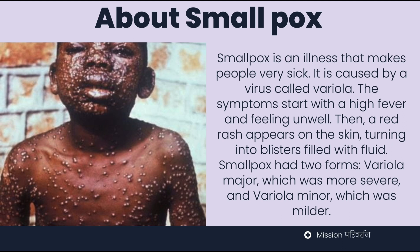The virus is called variola. The symptoms start with a high fever and feeling unwell, then a red rash appears on the skin, turning into blisters filled with fluid. Smallpox had two forms: variola major, which is the deadliest form, and variola minor, which is milder.